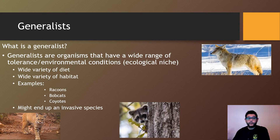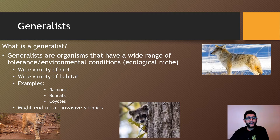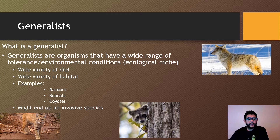So generalists — what are they? Generalists are species that tend to have a wide range of tolerance for their environment. We would call it an ecological niche, so they have the ability to do quite a bit. They can have a wide variety for their diet, they can withstand a lot of habitat, and they may have a large range of tolerance. Some examples of these types of species would be raccoons, bobcats, or coyotes — these are very famous for being able to live in different environments.